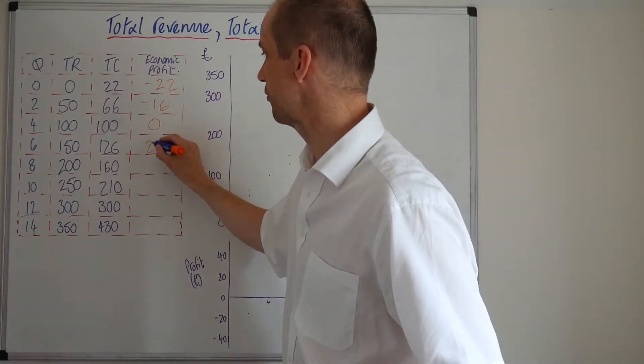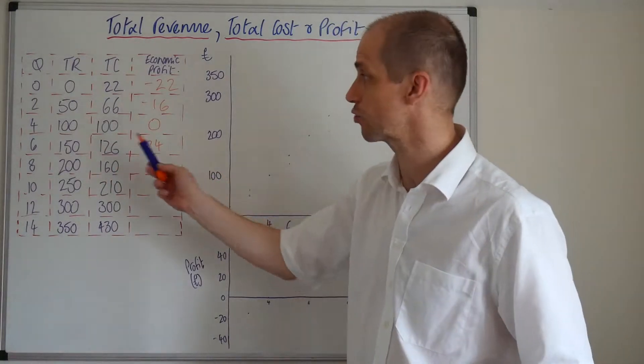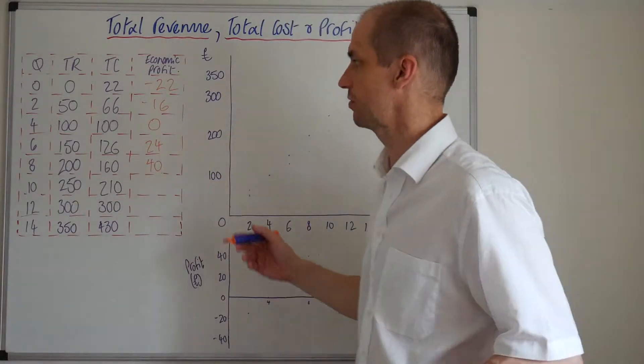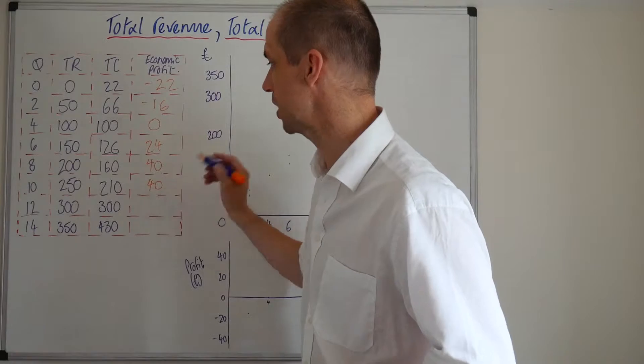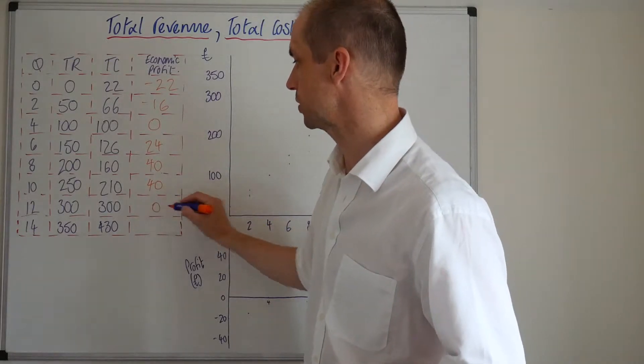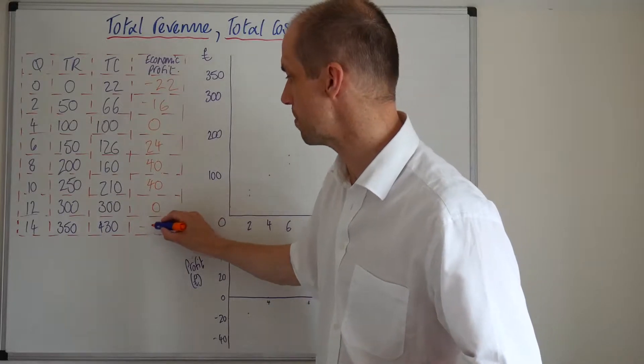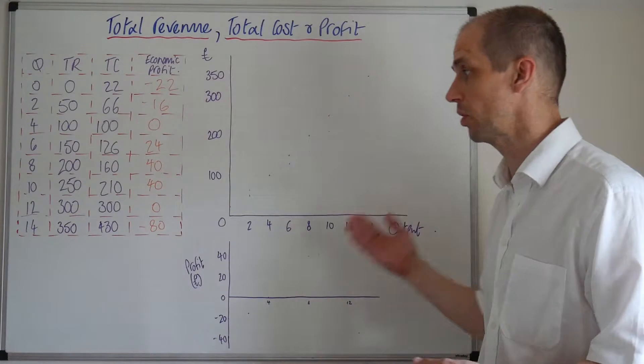Moreover, we have 24 profit now, because notice total revenue is now greater than total cost. We then have 40 in terms of the economic profit generated. Once again, we have 40, and then we reach a point of zero once again, and then suddenly we're back down to a rather nasty situation where we've got minus 80.